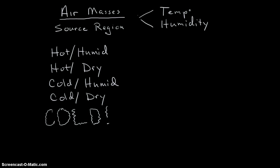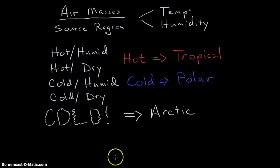And so there's a couple of terms that we should be aware of. If an air mass is hot, then that's called tropical. If the air mass is cold, then we label that as polar. And then if it is that super, super cold one, we call that Arctic or sometimes Antarctic.